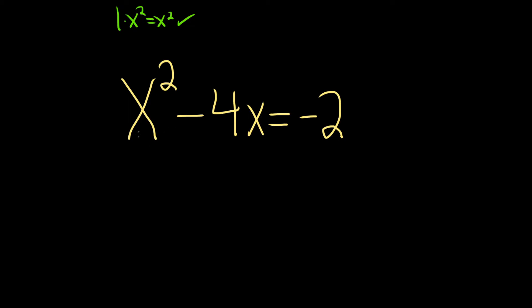Secondly, you want to make sure that you have only x terms on one side. We have all our x terms on one side and a constant on the other. So now we're ready to complete the square.